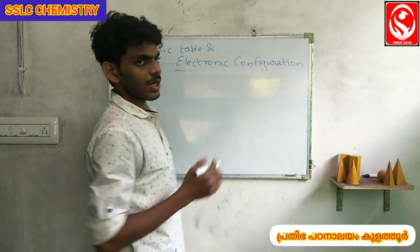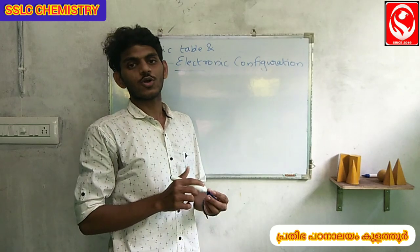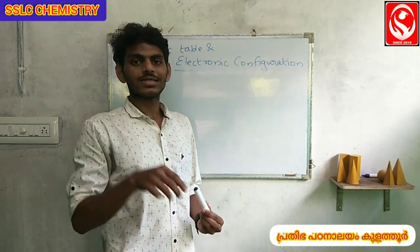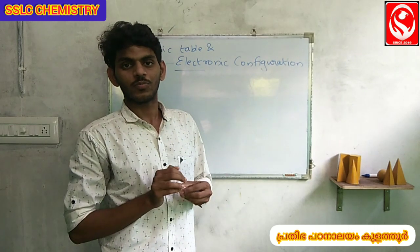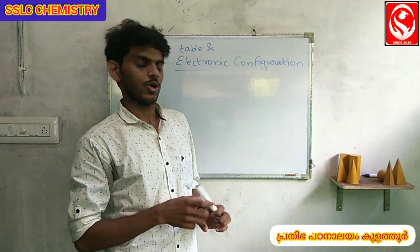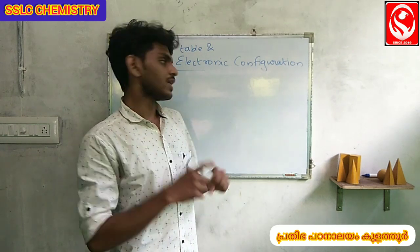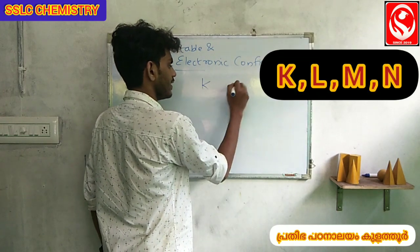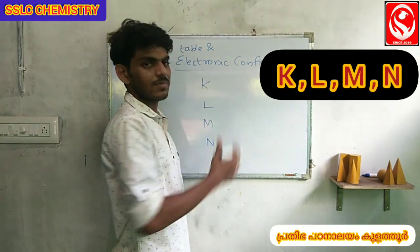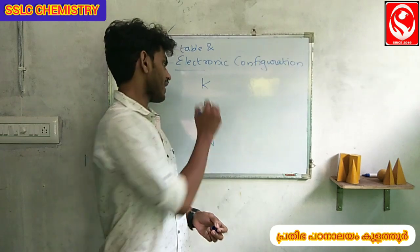We will talk about the nucleus. Electrons revolve around the nucleus. The path of revolution is the shell. The shell is the same — we call it K, L, M, N.